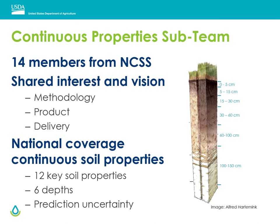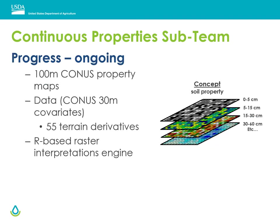Our continuous properties sub-team is focused on producing nationwide soil property maps, starting with 12 key soil properties at six depth intervals including uncertainty. This is a diverse team with members from across the NCSS. We are currently testing methods and a workflow for a set of 100 meter resolution property maps for CONUS, and are developing the 30 meter covariate set to move to those property maps next. Team members including Colby Brungard and Joe Bram from New Mexico State University, Travis Nauman from the USGS, and Dylan Beaudet, Steven Roker, Jason Nemechek, and Bob Dobos from NRCS have been involved with the development of an R-based raster interpretations engine.